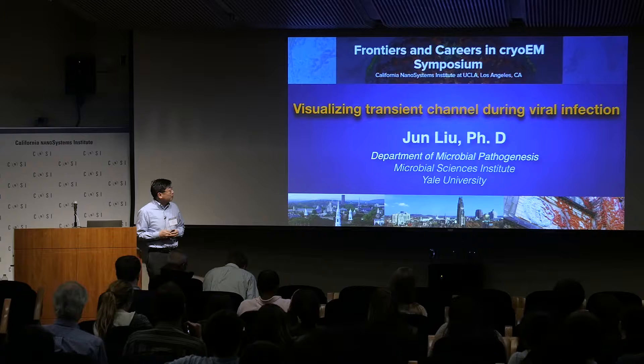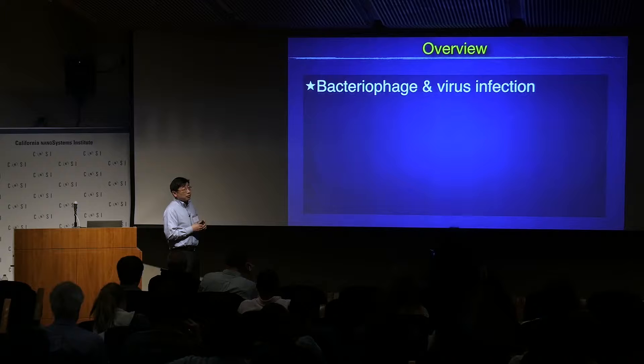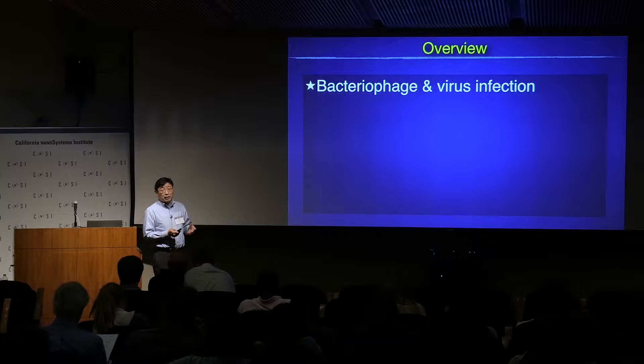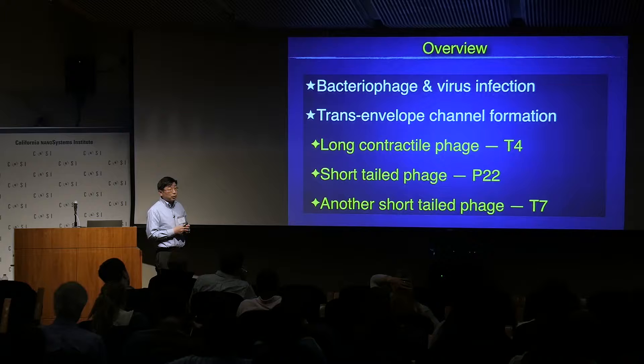What I want to show you here is give you a sense of what virus we work on. It's actually bacterial phage, and how they actually cause infection. We'll show three different types of phage and how they form a transient channel to allow them to translocate DNA across the bacterial cell envelope.